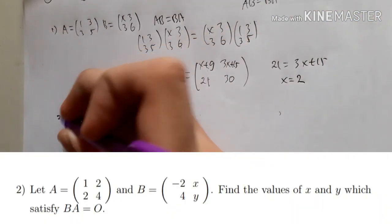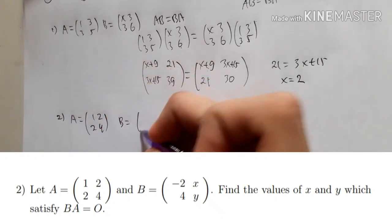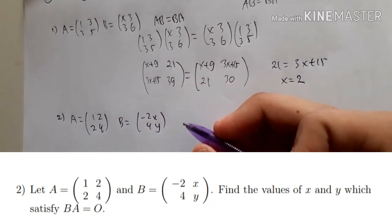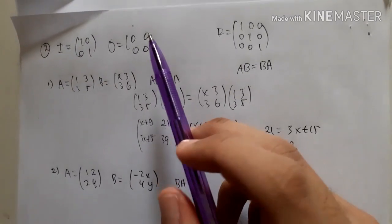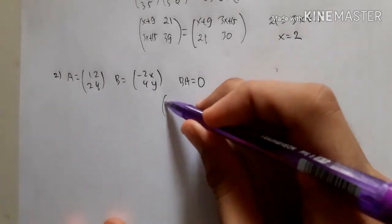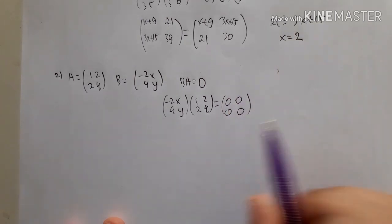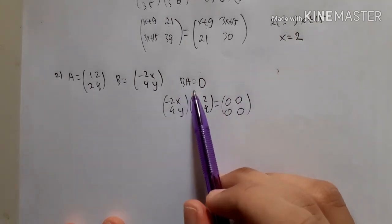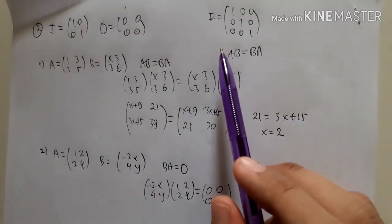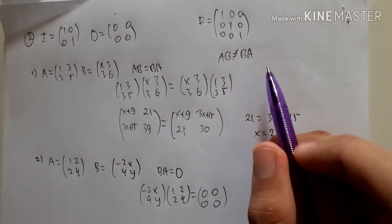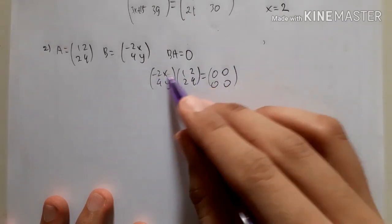For number two, matrix A is [1,2;2,4] and B is [-2,x;4,y]. Find x and y to satisfy B×A = O, the zero matrix. So [-2,x;4,y]×[1,2;2,4] = [0,0;0,0]. Remember, B×A means B is on the left — you cannot swap them because matrix multiplication does not apply the commutative rule.